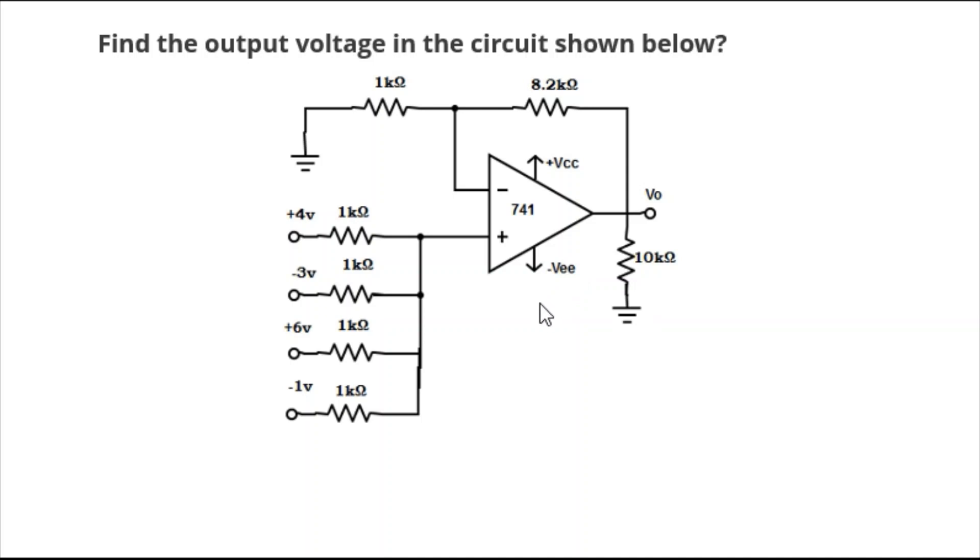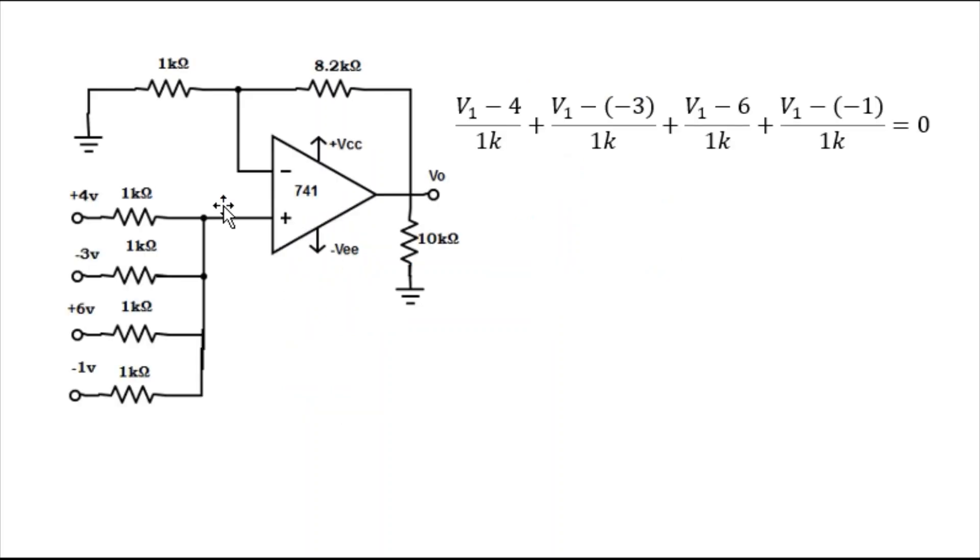So here you can see many resistances are there, and across these resistances different voltages are connected. First we will apply nodal analysis. You can also calculate the potential at this terminal—let's call it V1. We are going to calculate the V1 terminal potential or voltage. So +4 volt, -3 volt, +6 volt, and -1 volt.